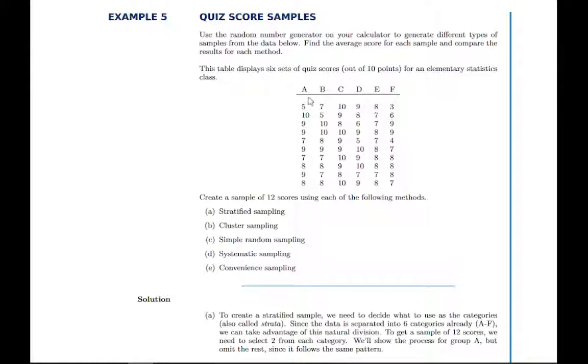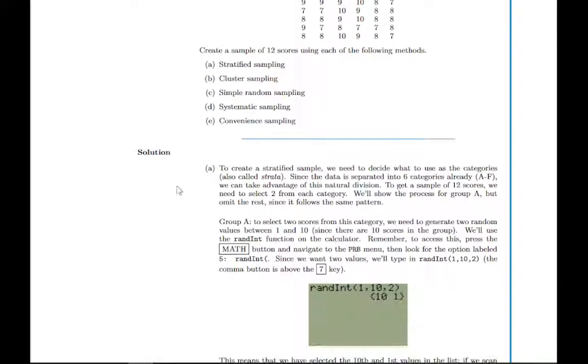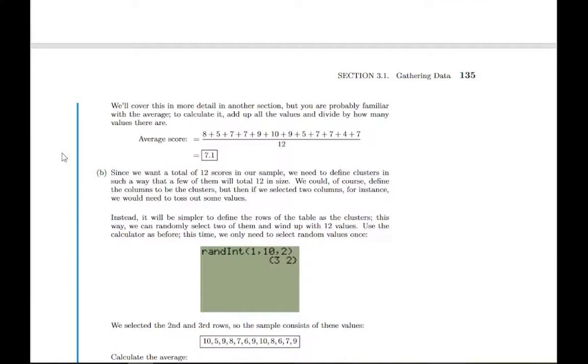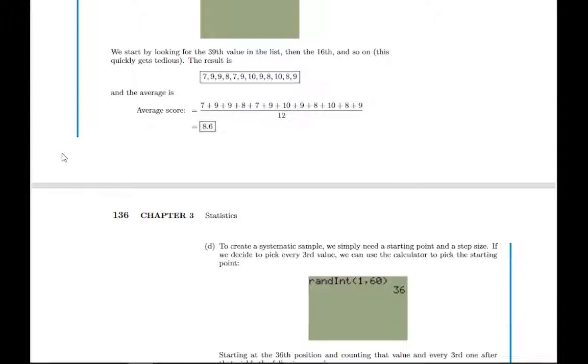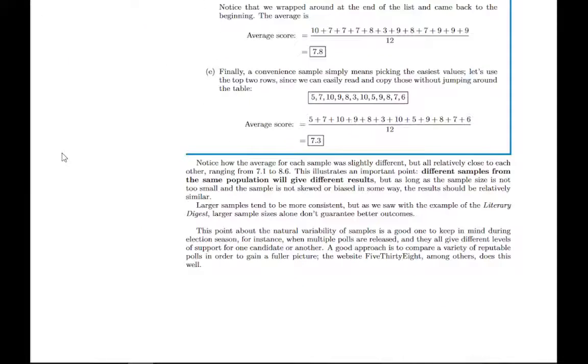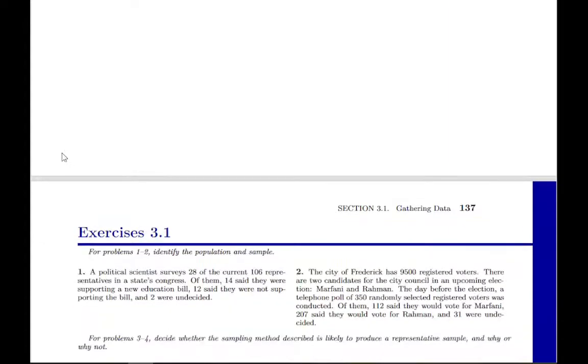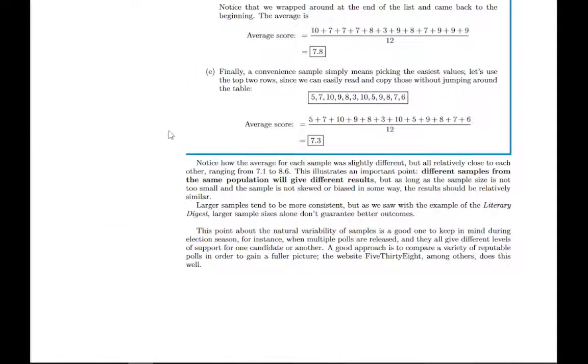There's an example of actually picking a sample using these different sampling methods. You can go through it—there's a lot of detail here. It's a long example because it goes through in great detail on each type of sampling from that same population. That brings us to the end of section 3.1 on gathering data. It's a lot about sampling and then some other concepts to think about like representative samples and sample size and things like that.